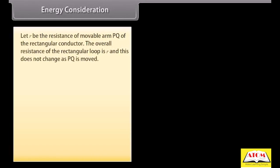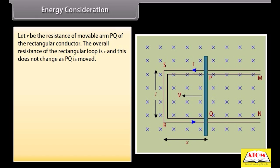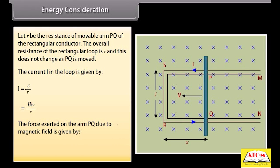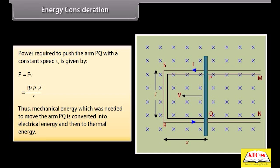Energy Consideration. Let R be the resistance of the movable arm PQ. The current I in the loop is E/R = BLV/R. The force exerted on arm PQ due to the magnetic field is ILB = B²L²V/R. The power required to push arm PQ with constant speed V is B²L²V²/R. Thus the mechanical energy needed to move arm PQ is converted into electrical energy and then into thermal energy.